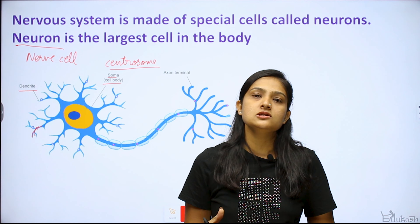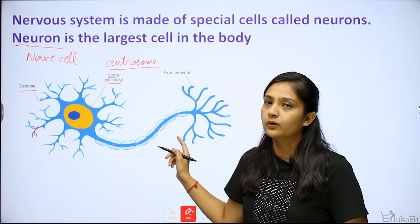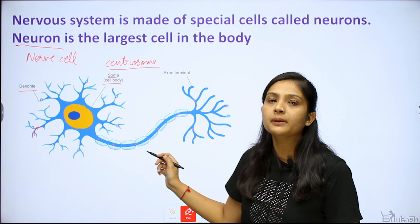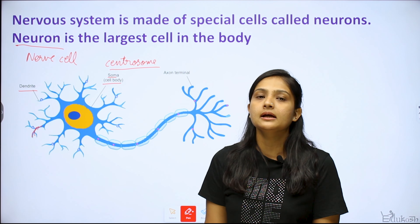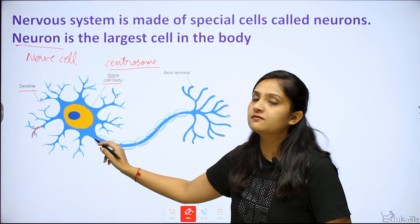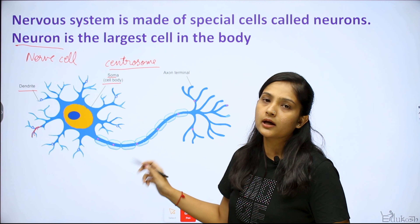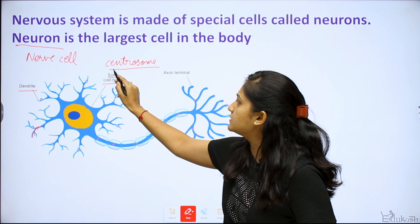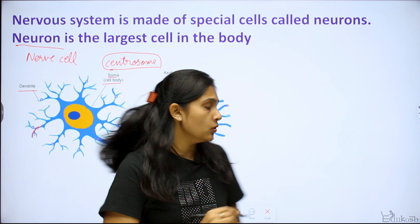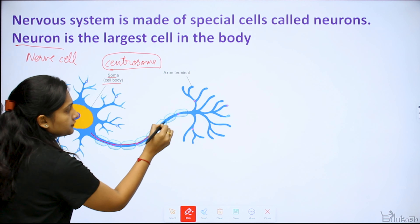The centrosome is absent in the neuron cell. Because centrosome is absent, the neuron cell cannot divide. This is why brain injury and spinal cord injury are so severe — if the neurons are damaged, new ones cannot form, so the connection breaks. These are very delicate cells.